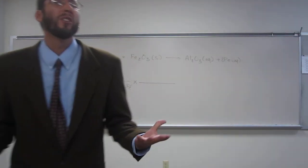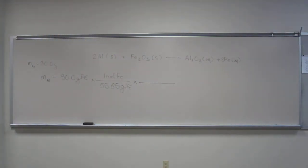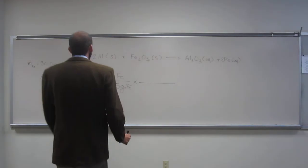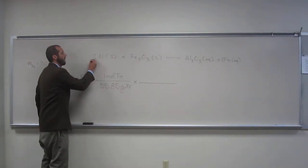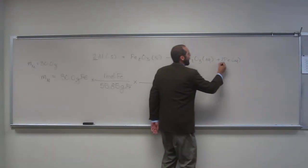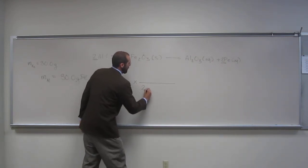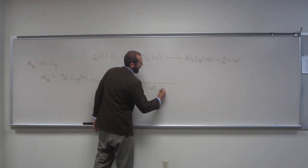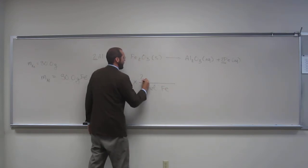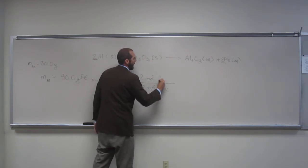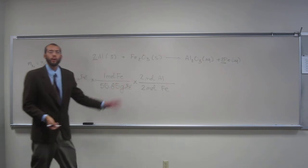One to one. Or, yeah, or a two to two. Let's just keep it two to two. Because why? Because the coefficient here is two. Coefficient here is two. Okay? So, two mole Fe, two mole Al. And you guys are right, it's a one to one ratio.